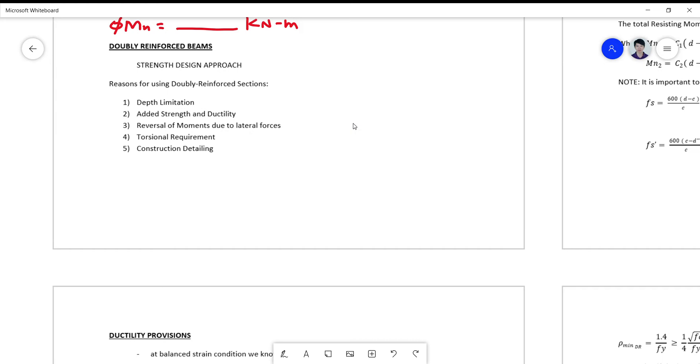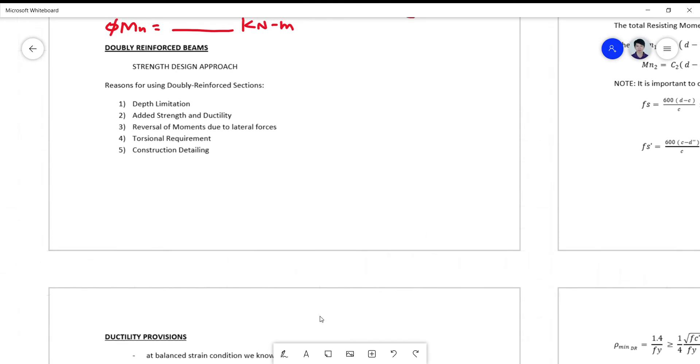There are five reasons why we do it. First one is depth limitation. So if we have here a beam in which the depth is limited due to aesthetic consideration,